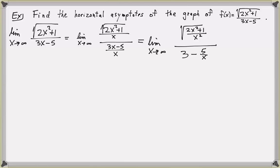The denominator simplifies: if I divide both terms by x, I get 3 minus 5 over x. But in the numerator, to divide by x, I need to get the x underneath the square root symbol. So I'm going to rewrite x as the square root of x squared, so I can simplify the fraction underneath the radical. The numerator simplifies as the square root of 2 plus 1 over x squared.